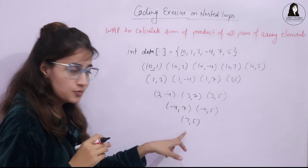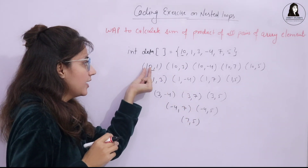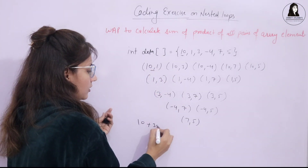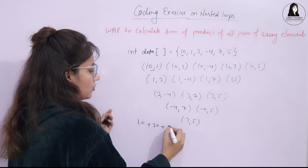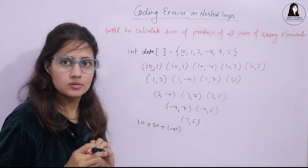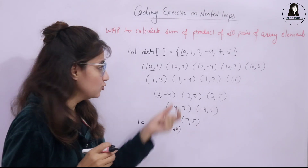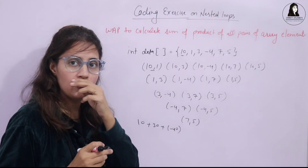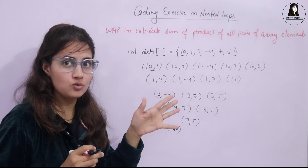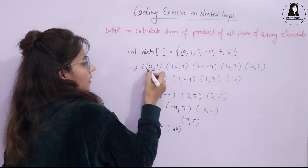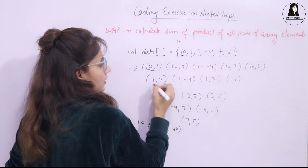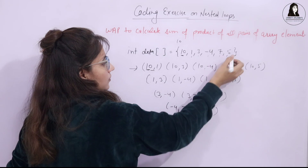First you have to find out these pairs, then compute the product: 10 × 1 = 10, plus 10 × 3 = 30, plus 10 × -4 = -40, and so on — product of each pair, then sum of all the products. You will do this with nested loops. For element 10 at index 0, you pair it with 1, 3, -4, 7, 5. Then for element 1, you pair it with 3, -4, 7, 5.